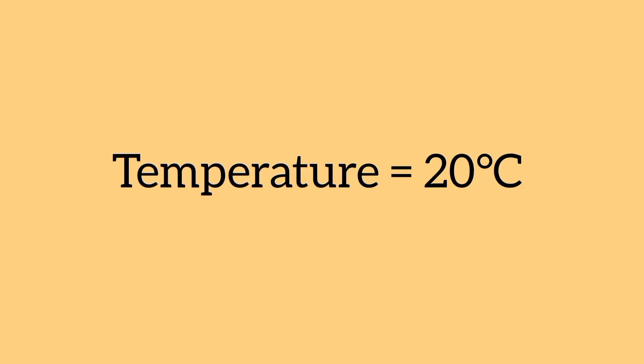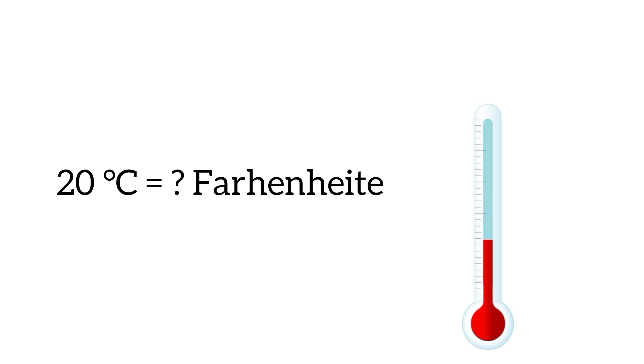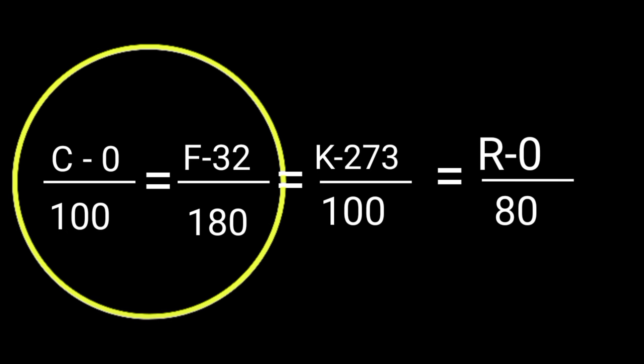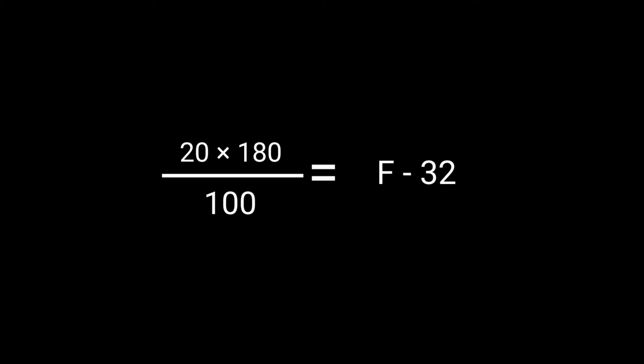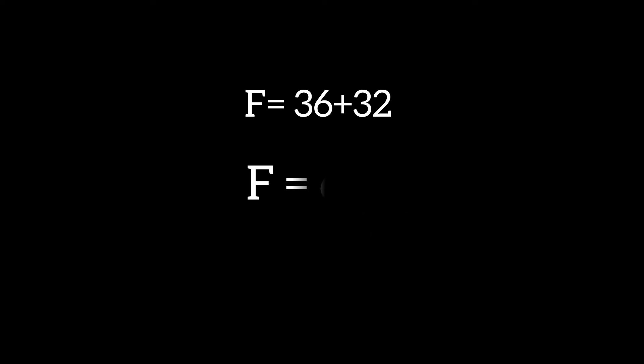Of course, we have to denote 20 degree Celsius on these various scales. First of all, let's convert it into Fahrenheit scale. We'll take these two terms and put the value of Celsius in this formula. By solving this, we'll get the temperature in Fahrenheit which is equal to 68 degree Fahrenheit.